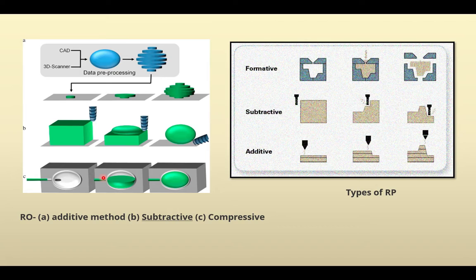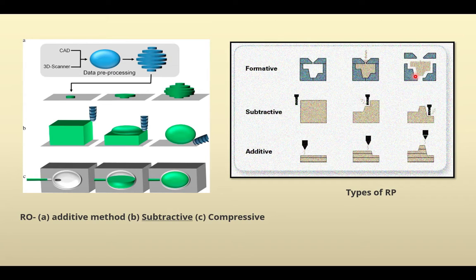Another classification is the compressive method, where you have a mold, fill it with molten metal using squeeze or similar technology, and get the product. A newer classification is formative — similar to compressive — as in powder metallurgy, where you place material in powder form into a predefined mold, apply pressure, compaction takes place, and you get a product in the shape of the die. This is called the formative method.